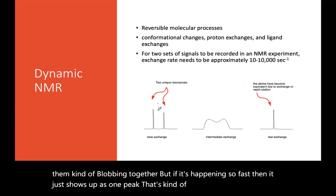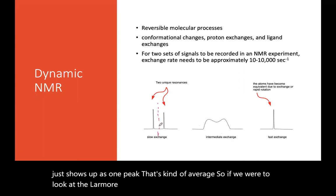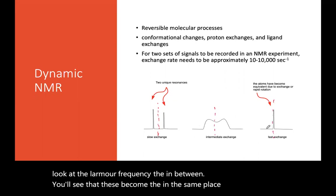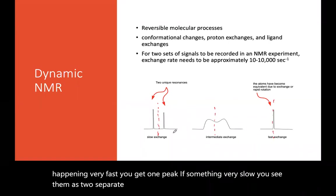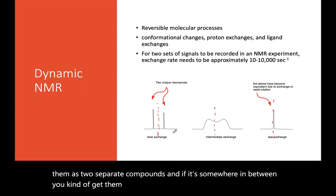So if we were to look at the Larmor frequency in between, you'll see that these become in the same place. So if it's happening very fast, you get one peak. If it's happening very slow, you see them as two separate compounds. And if it's somewhere in between, you kind of get them blobbing because you see like a blur of them interchanging.